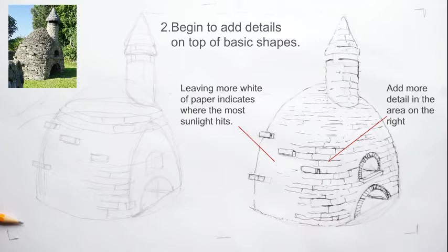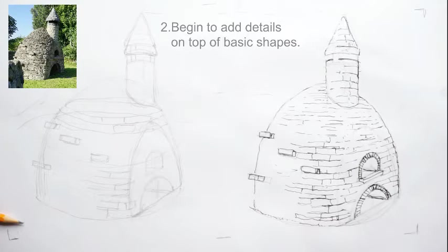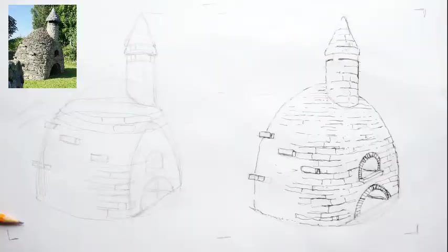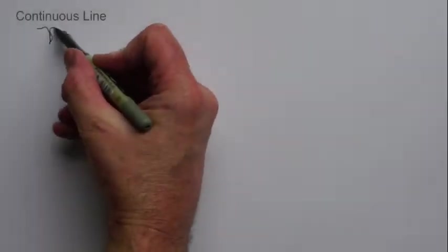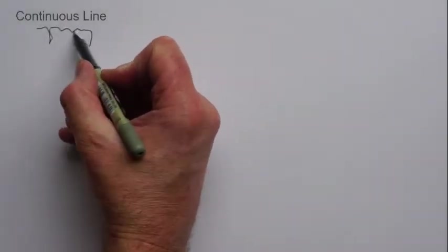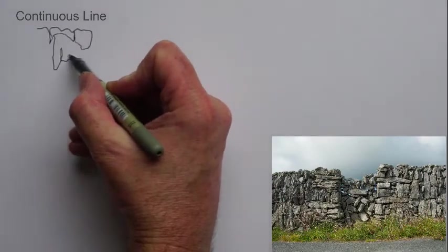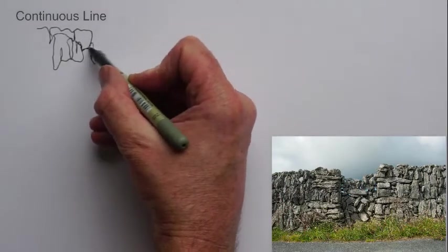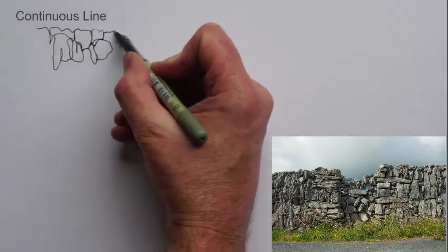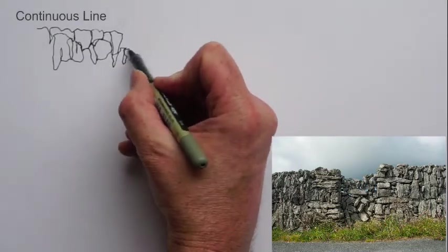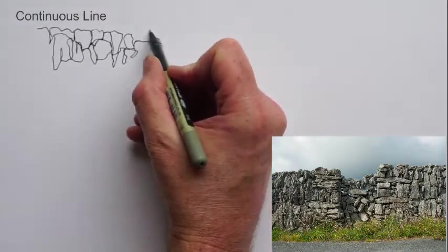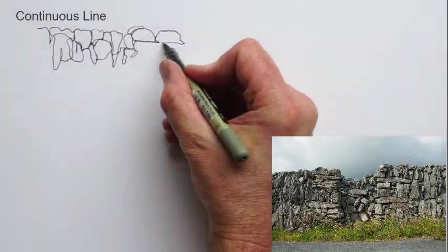Okay, so we're talking about continuous line now. What I find interesting about the continuous line is that you leave your pen right on the page and you don't take it off. You know, certainly as much as possible you keep it one continuous line.